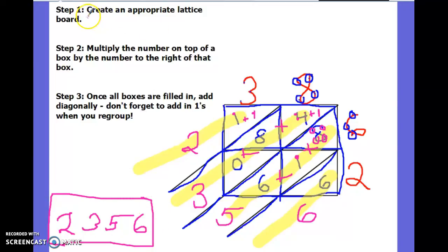So as long as you remember these three steps, create an appropriate lattice board, multiply the numbers on top by the numbers on the right, and then add, you're good to go. Create the lattice boards and multiply accurately using flexible math strategies. Be sure to check out future videos to try this out with worksheets on Mr. Panz's website. Hope this helps.